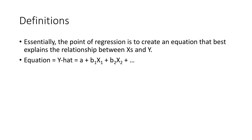The essential point of regression is to create an equation that best explains the relationship between X and Y. We're trying to figure out if our predictors actually predict Y, and we use Y as a criterion to determine if our X's work well. So the equation might be Y-hat equals A plus B1·X1 plus B2·X2, and so on — this is a multiple regression equation. We have multiple predictors because simple linear regression with one predictor is essentially correlation. We're going to work in a multiple regression framework where multiple IVs predict our DV.